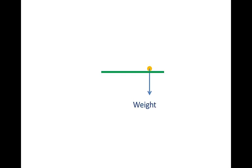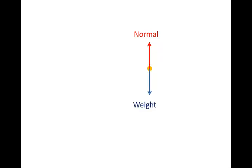On a horizontal surface, normal force is just as strong as weight. Here we have the weight of the body — let's say of you. Since this is a horizontal surface, the weight is acting at right angles to the surface, and the normal force acts exactly in the opposite direction to the weight. Since you're not accelerating vertically, the normal force and your weight are equal in magnitude and opposite in direction. We can simplify these forces' labels as N and W — normal and weight.